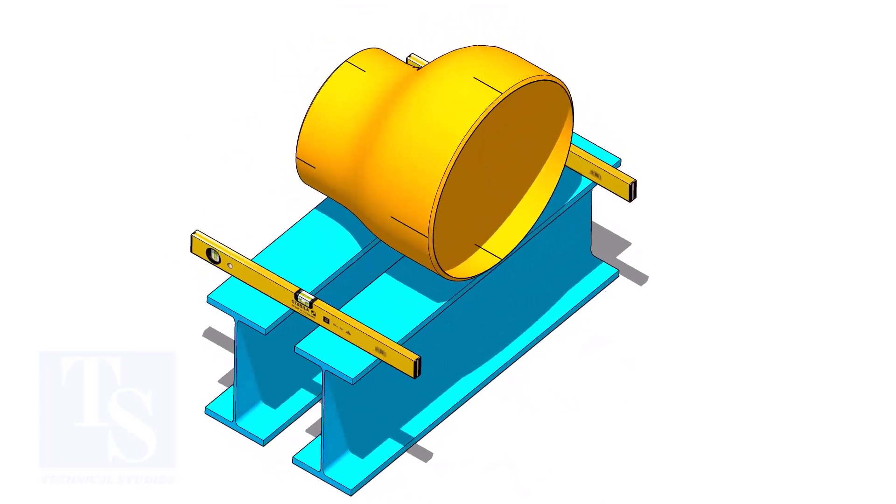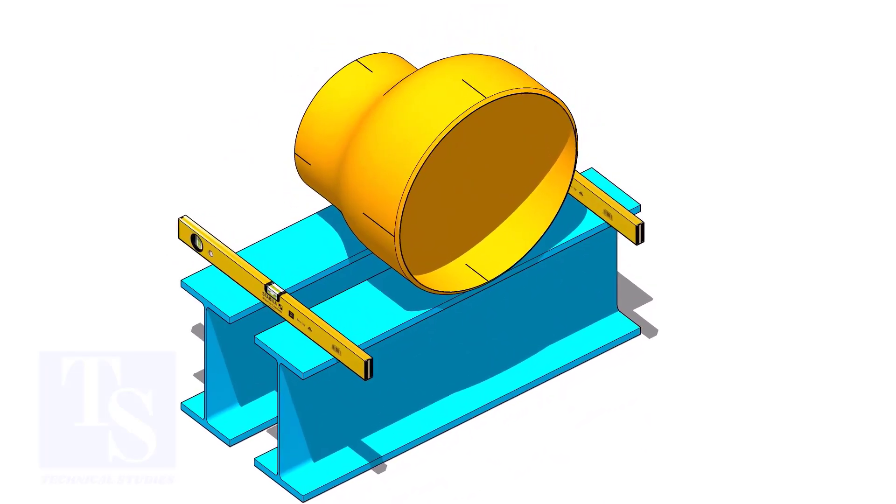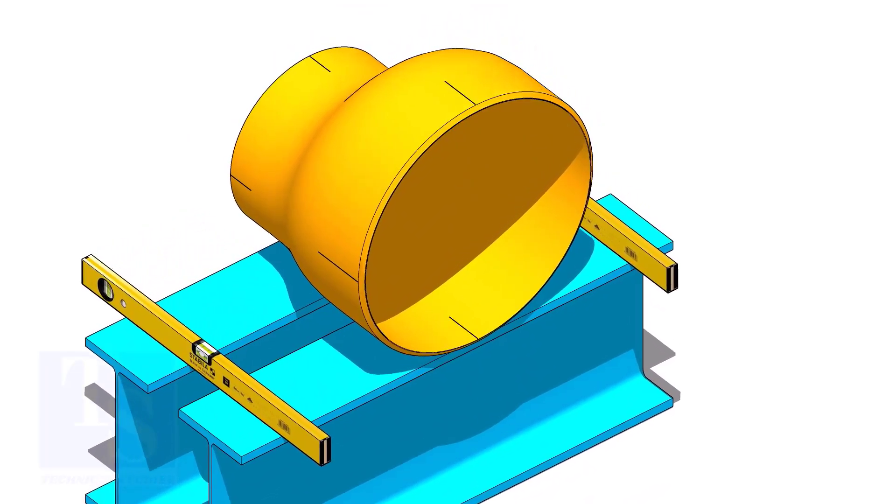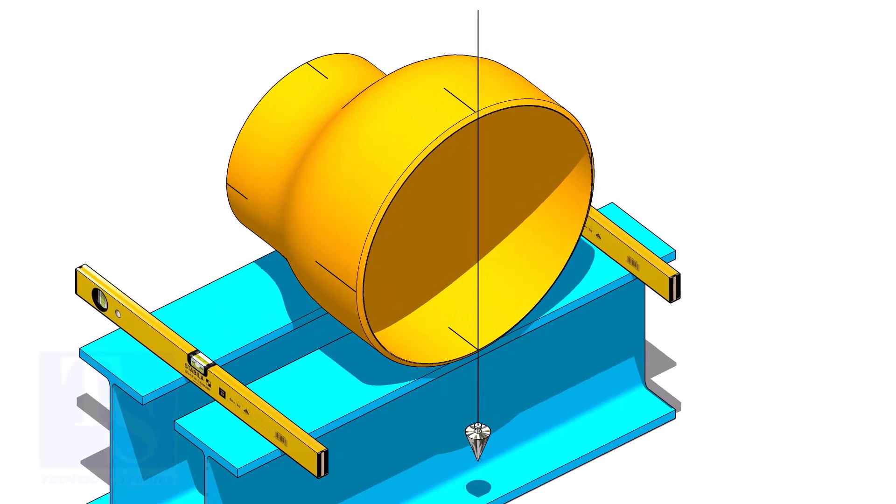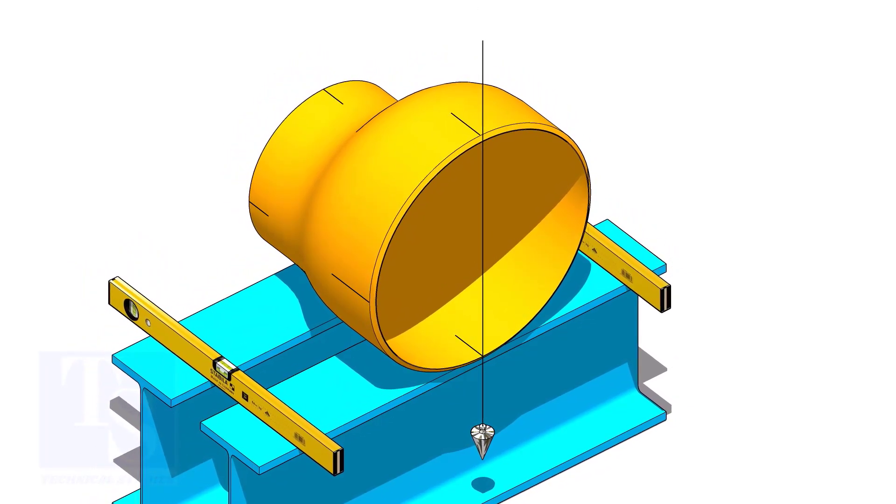Put the reducer on supports. Plumb the reducer and put packing on both sides.